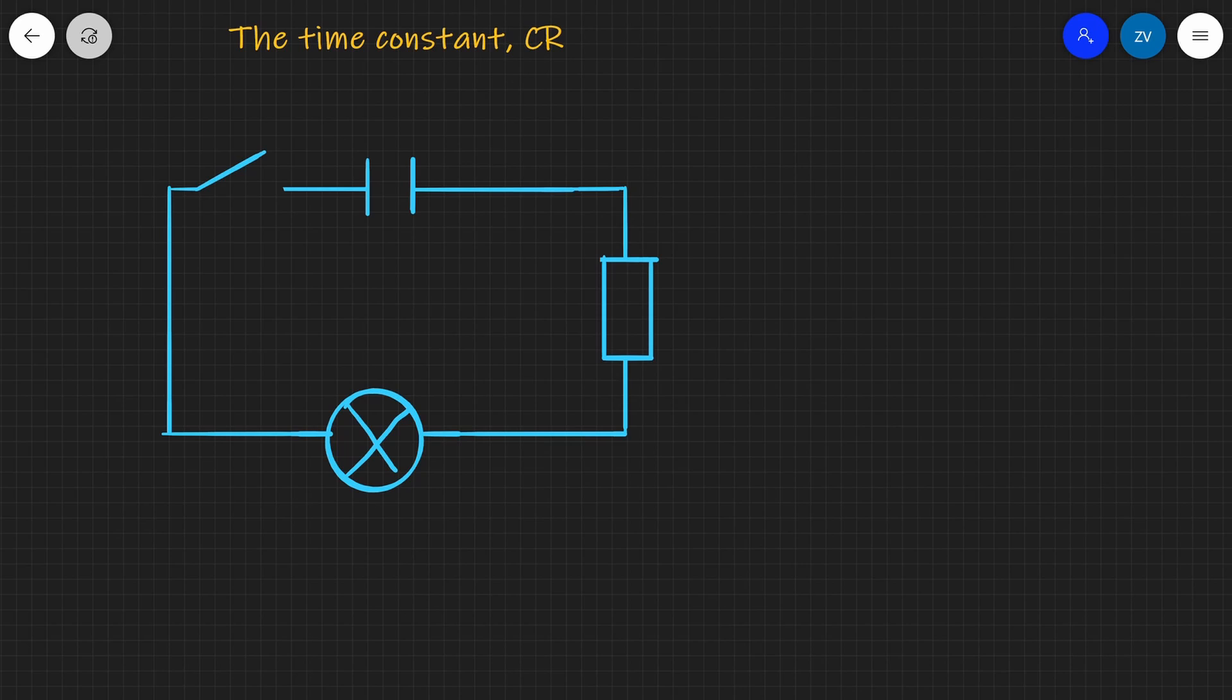Now how quickly will this capacitor actually discharge as soon as we switch on? Well that depends on two things. The first thing is the size of the capacitance C. If we have a higher capacitance we're going to be able to store a lot more charge. The other factor is the resistance R. If we have quite a high resistance then the capacitor is going to discharge a lot more slowly.